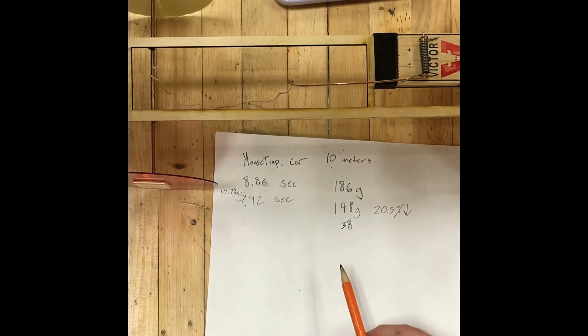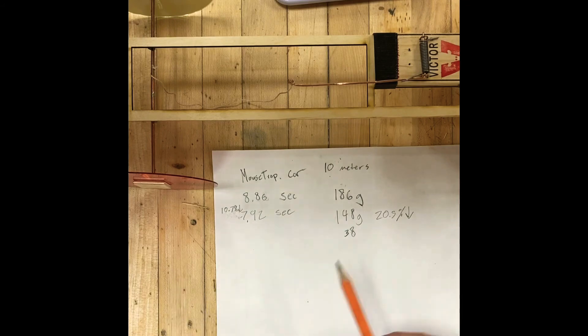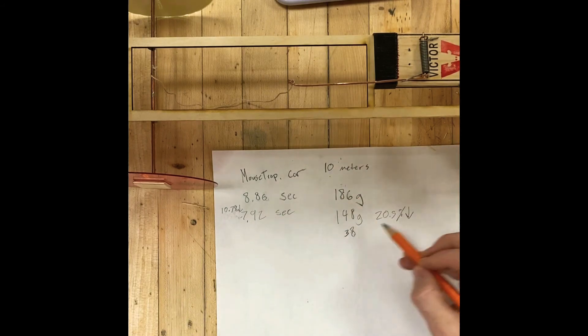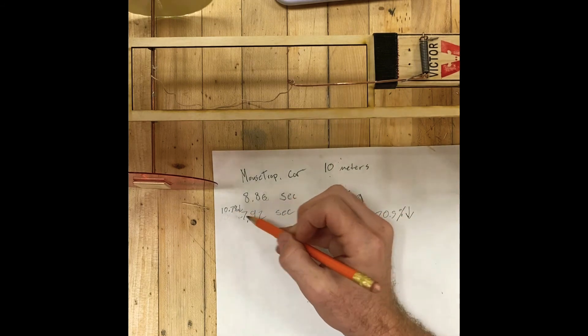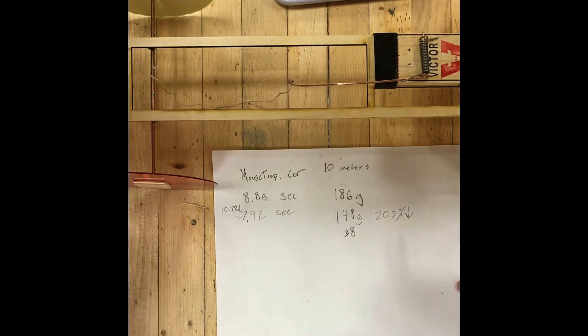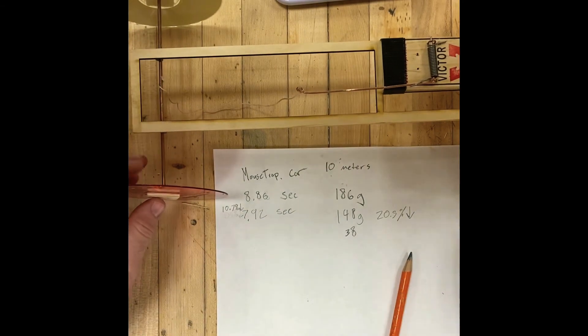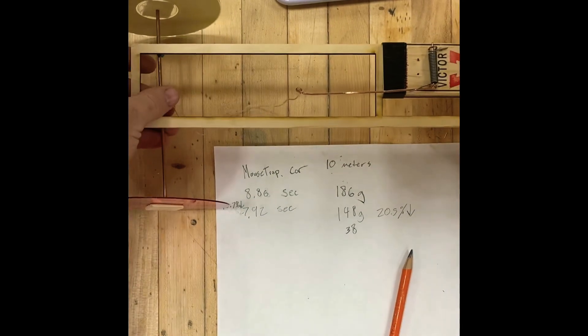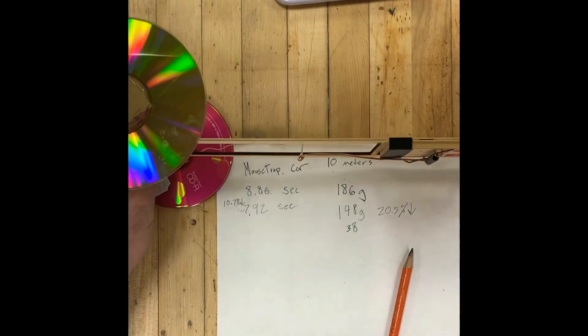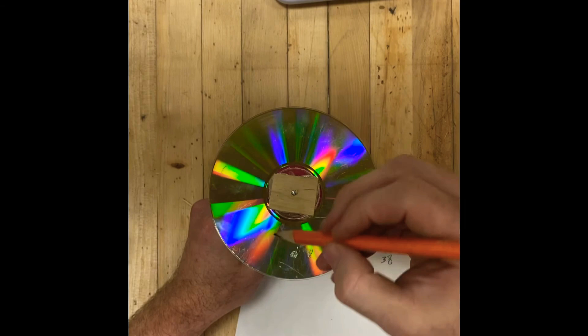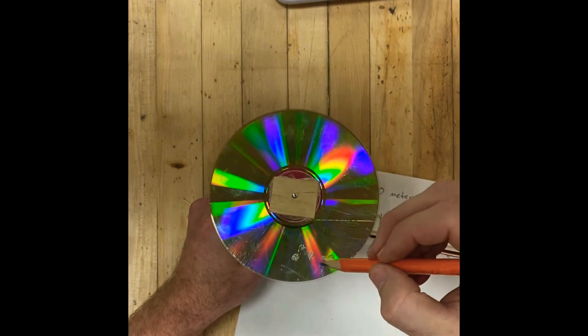So we had a total of a 10.7% reduction in time by just hollowing these sections out. I didn't change anything else on the mousetrap car, just hollowed out this, lost about 38 grams. 20% weight reduction, 10% reduction in speed. There's still other forces playing here for weight that we could reduce. We could reduce the weight of the wheels.